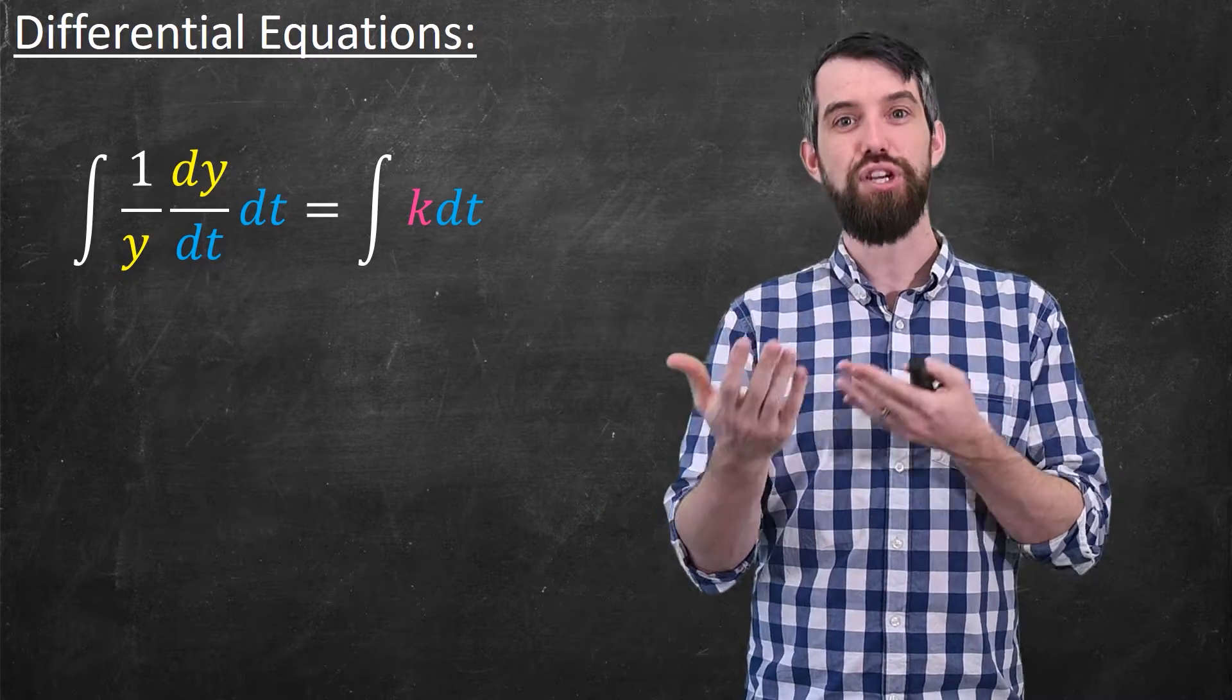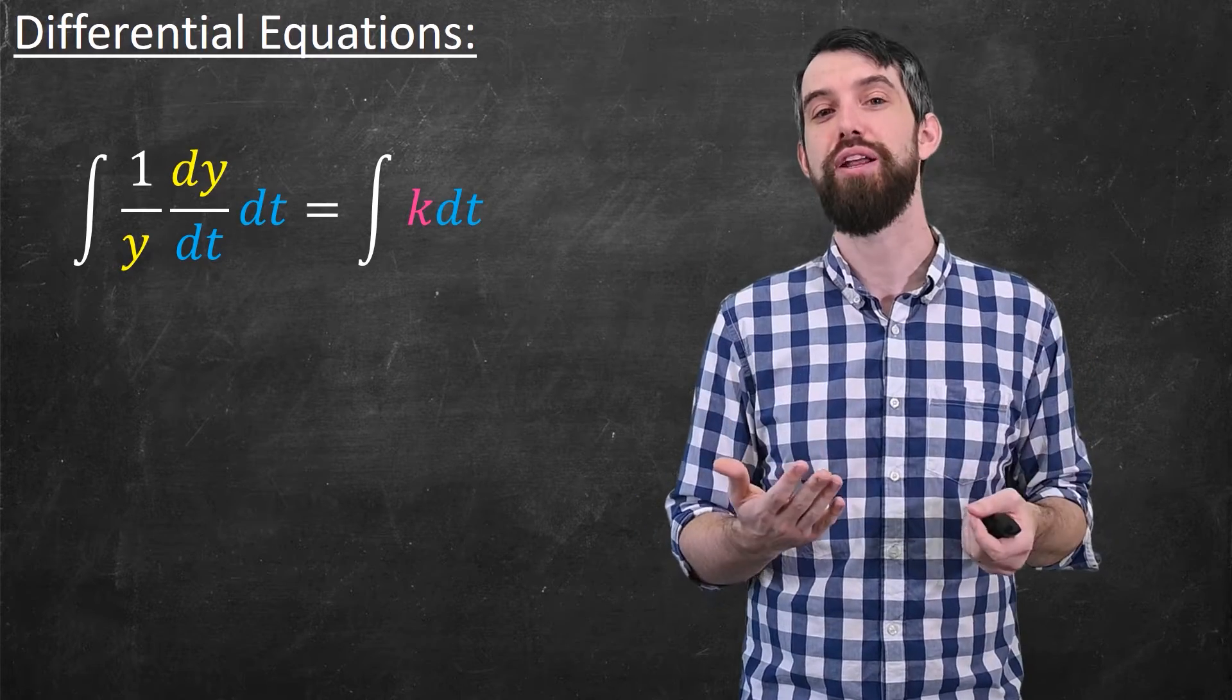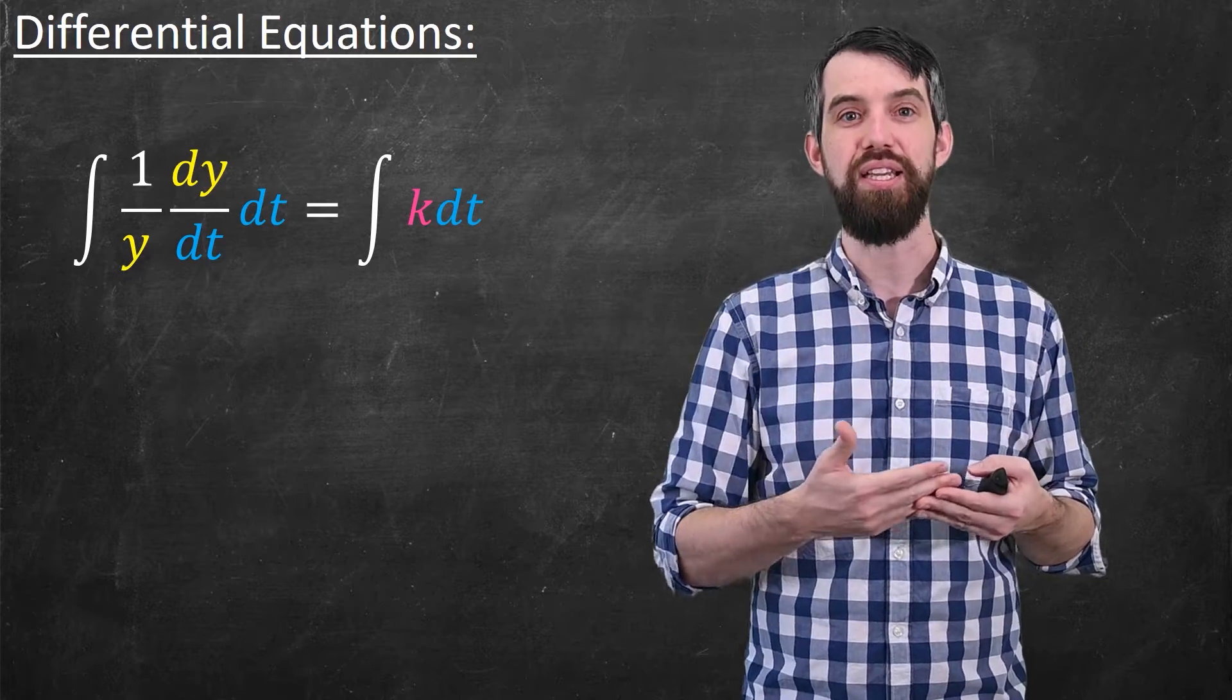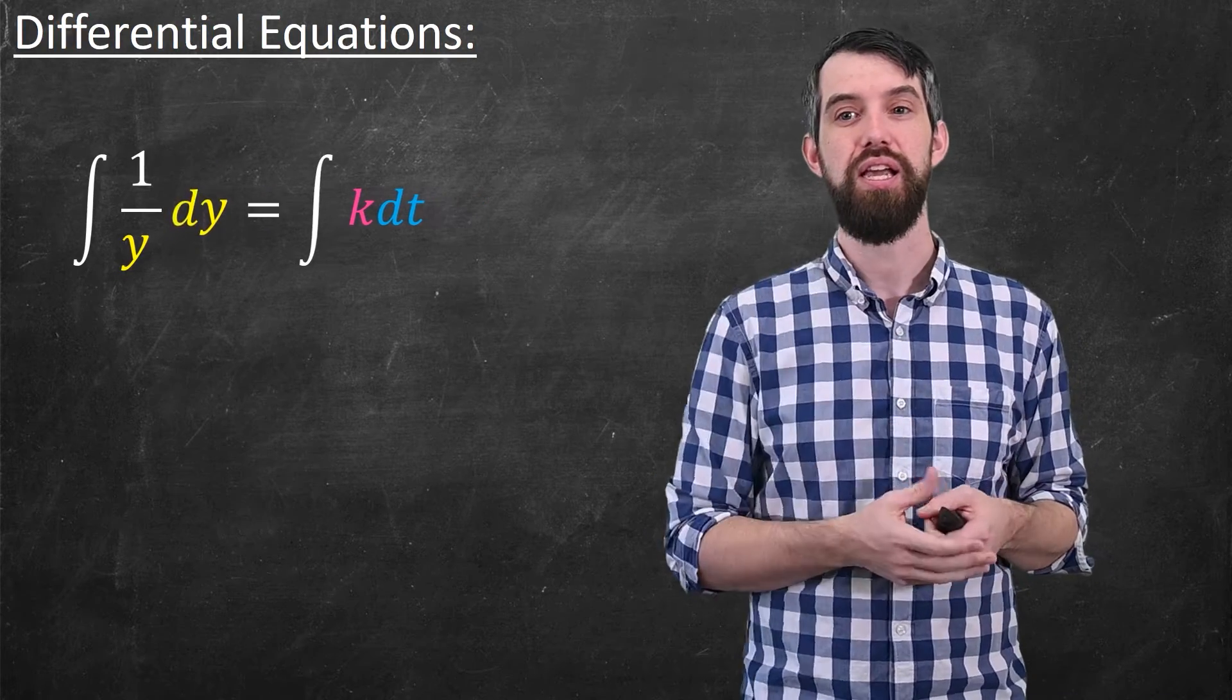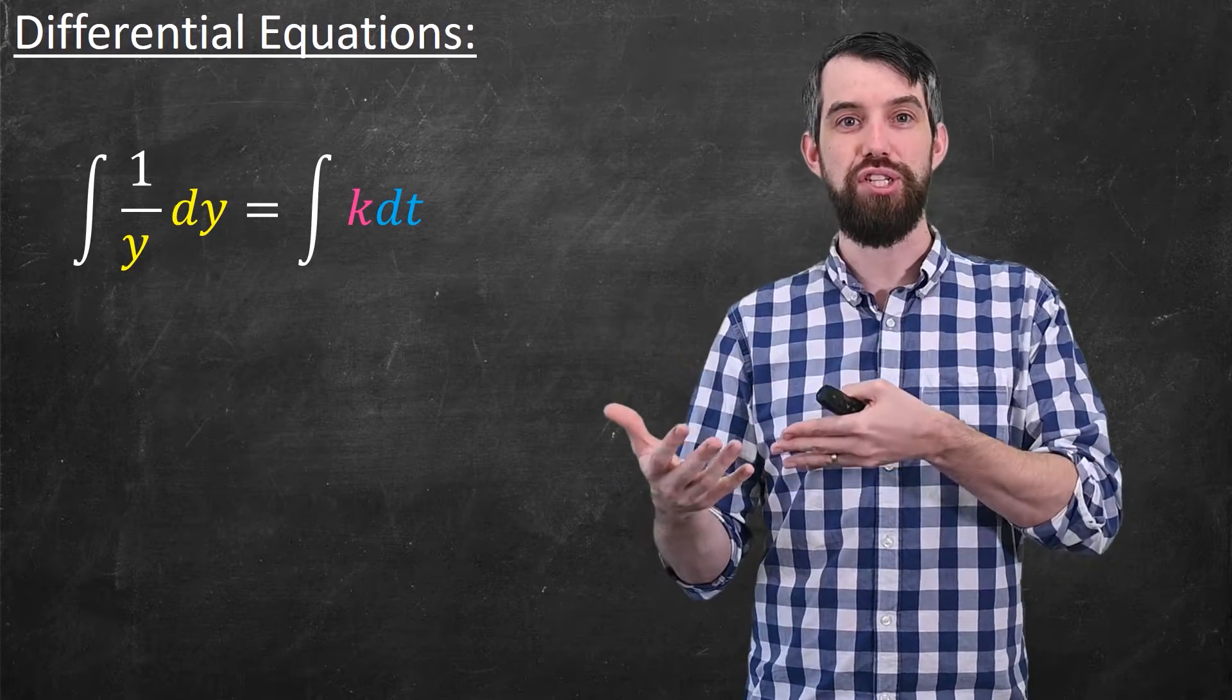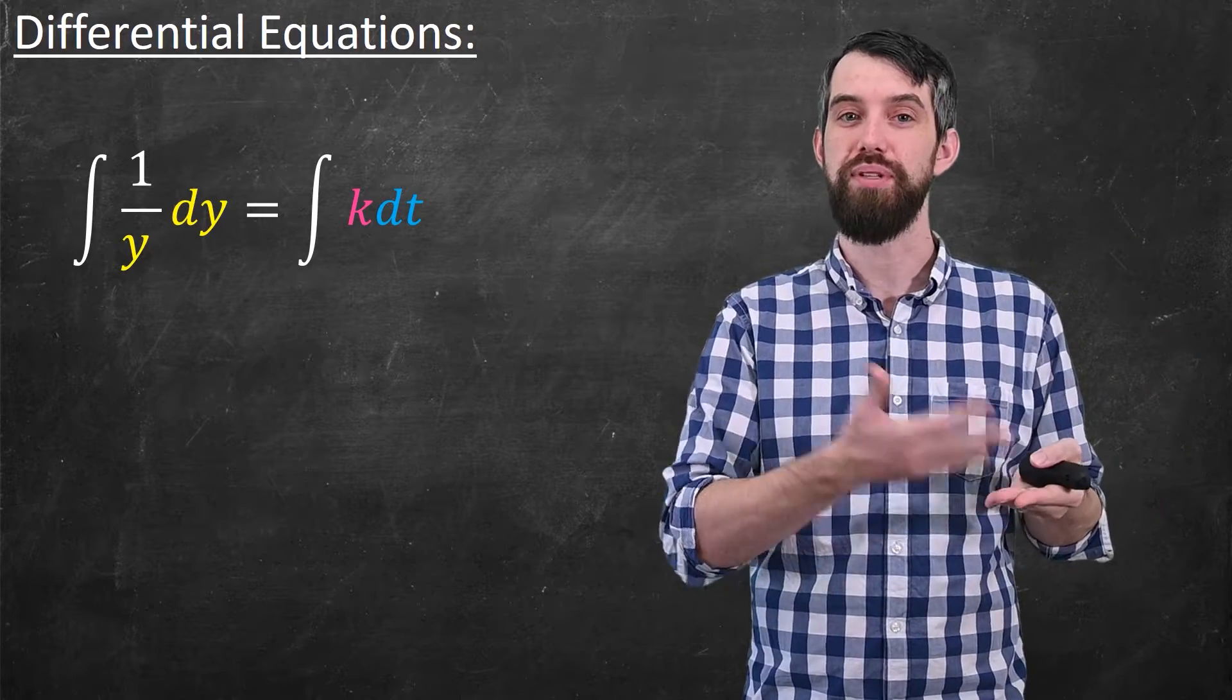Now for the left term, let me make a substitution. I'm going to define the differential dy to simply be the derivative dy/dt multiplied by the differential dt. That is, I will write this as 1 over y dy.